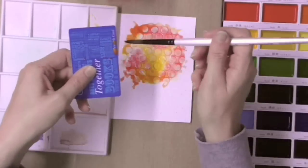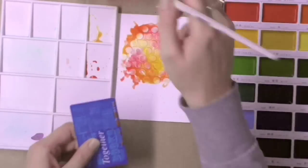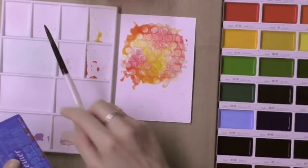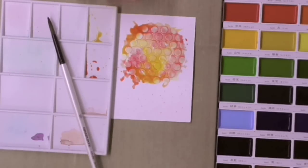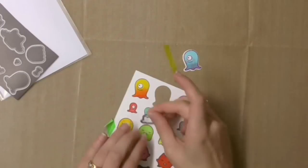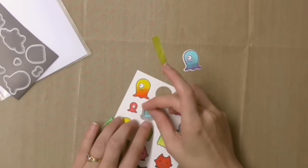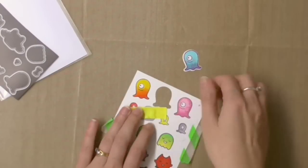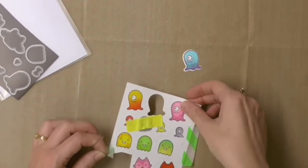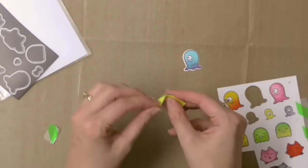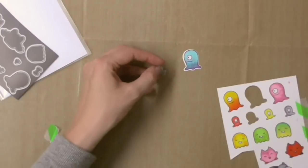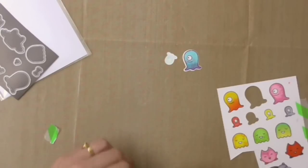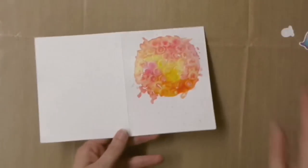So now I'm going to set this to the side to dry whilst I prepare the little monsters or little aliens that are going to go on my card. These little critters are from the monster mash stamp set from Lawn Fawn and I've stamped it onto some Neenah solar white cardstock and colored it in using some Copic markers. Now I'm just getting them ready and cutting them out using the coordinating dies.